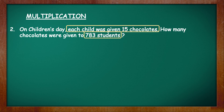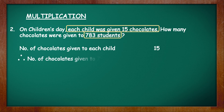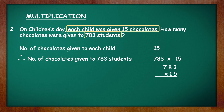Begin with the first statement, which is the number of chocolates given to each child: 15. Then find the number of chocolates given to 783 students. For that, the statement is: therefore, number of chocolates given to 783 students, and to find that we have to multiply 783 into 15. Write that multiplication statement first and then solve it below.